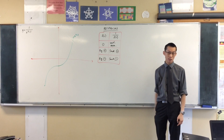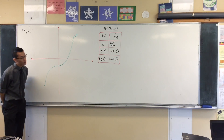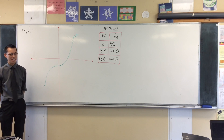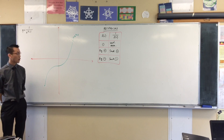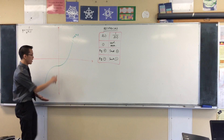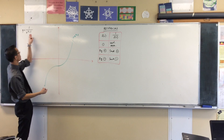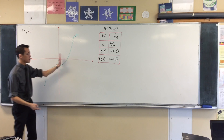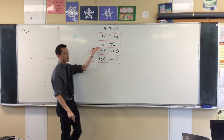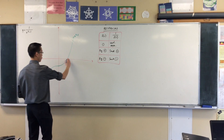So y equals x cubed minus one is the green graph. It has intercepts: the y-intercept is negative one (shifted down one), and the x-intercept is at x equals one where y equals zero. At x equals one the function is zero, so its reciprocal will have a vertical asymptote there — get your ruler out and draw it in.